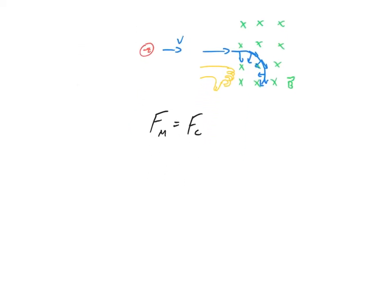So I can set the magnitude of the charge times Vb sine of the angle between the velocity and the field equal to mass times speed squared over radius. And you can do a couple of different things with this.